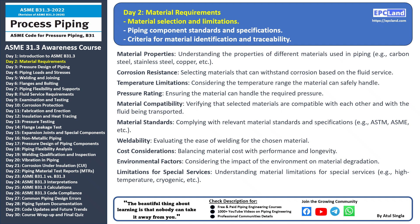Let's dive into some key aspects to consider. First, we need to understand the properties of different materials commonly used in piping, including carbon steel, stainless steel, copper, and more. Each material has unique characteristics that impact its performance. Corrosion resistance is another vital consideration — the selected material must be able to withstand the corrosive effects of the fluid being transported. Failure to choose a corrosion-resistant material can lead to premature pipe degradation and leakage.